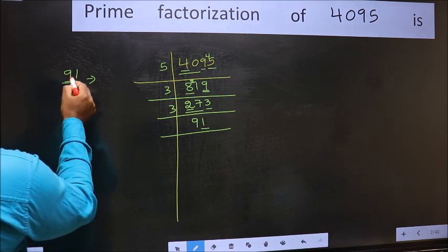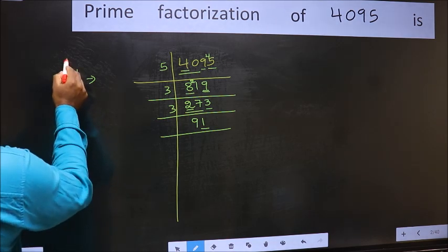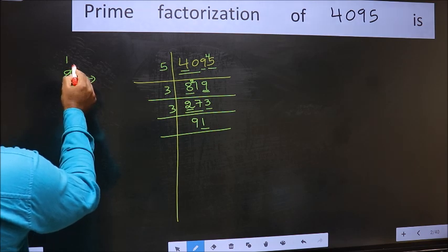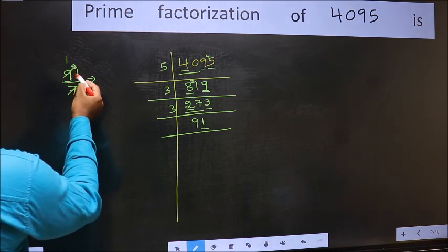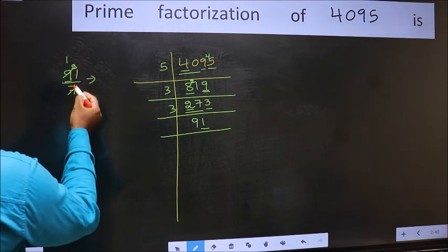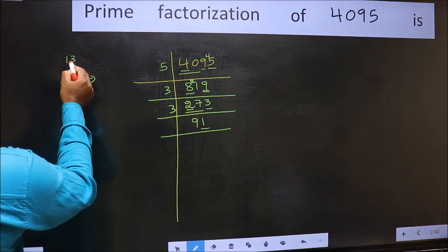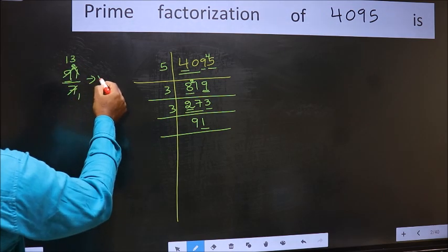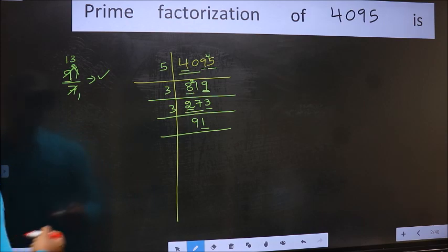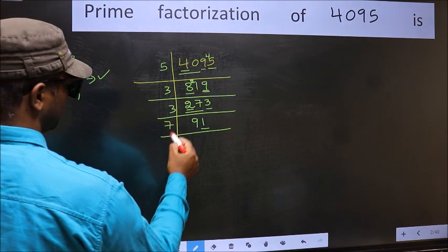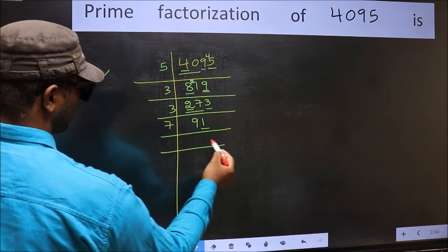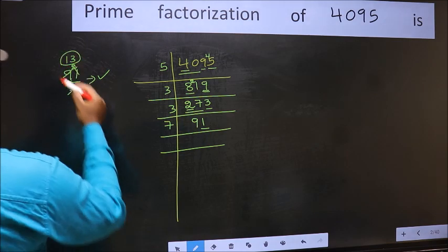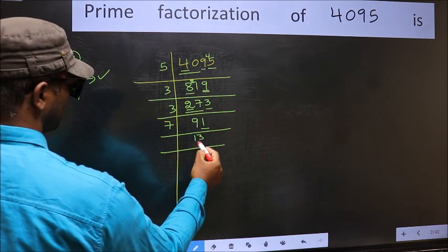Let us check divisibility by 7. A number close to 9 in the 7 table is 7 once 7, so 9 minus 7 is 2, carry forward 2. 21: when do we get 21 in the 7 table? 7 threes are 21. No number has been left out, so this is divisible by 7. Take 7, and here we write 13.